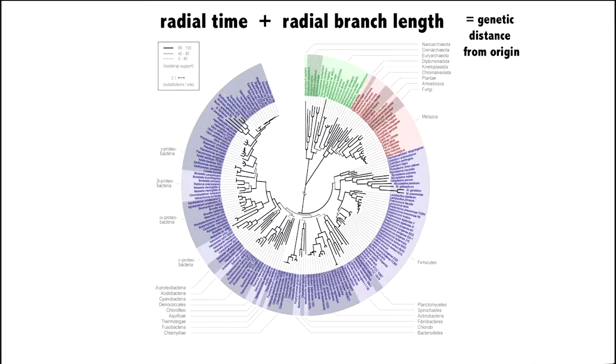Now, here's a tree which has both radial time and branch length as the radial. Branch length essentially means genetic distance from the origin. In this tree, all the names of the species you can see in the color around the edge are all the same distance from the center. But each of those species is connected to the center by a thin gray line, but also a thick gray line. The thick dark line is an estimate of how much genetic distance is there between that particular species and the center, the origin.